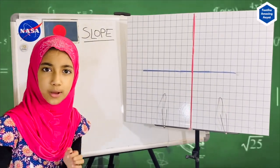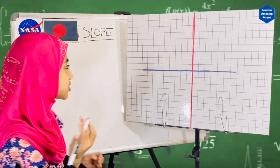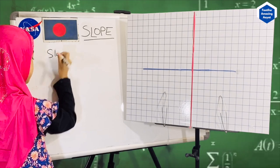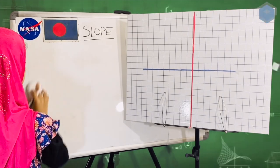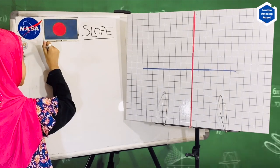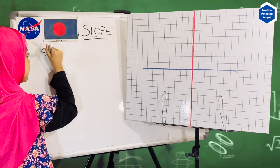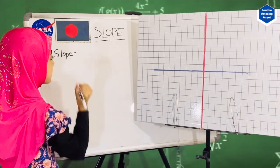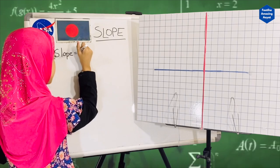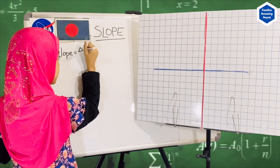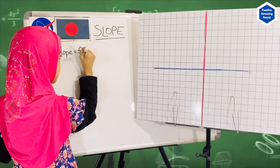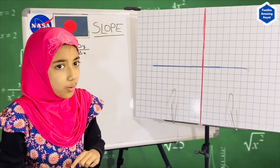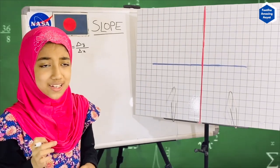So what is actually a slope? Let me write it a little bigger so you can all see. The slope is equal to delta y divided by delta x. Let me write that down — delta y by delta x. I know delta is a Greek letter, but what do I mean by this basically?